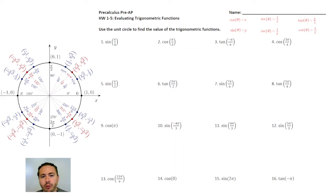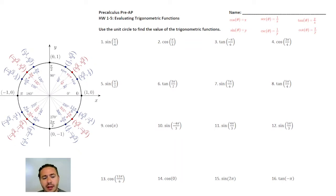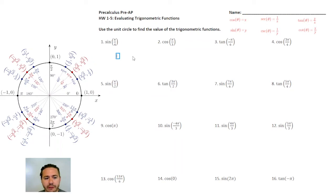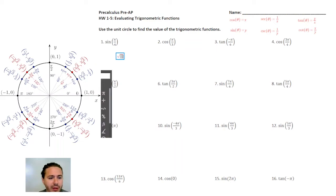Sine of π over 4: if you look at the unit circle, you'll see that at π over 4 the coordinate is √2/2 comma √2/2. So we're looking at the y value, and the y value is going to be √2/2. I'm going to be doing a lot of copy and paste here because a lot of these answers are going to be very similar.